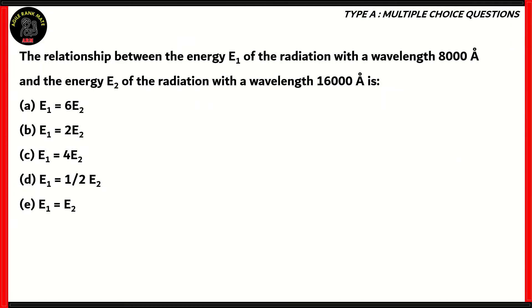And now, let's look at this question. It's quite an interesting one. The relationship between the energy E1 of a radiation with a wavelength of 8,000 angstroms and the energy E2 of the radiation with a wavelength of 16,000 angstroms is: E1 equals 6E2, E1 equals 2E2, E1 equals 4E2, E1 equals half of E2, or E1 equals E2. Which of these is correct?